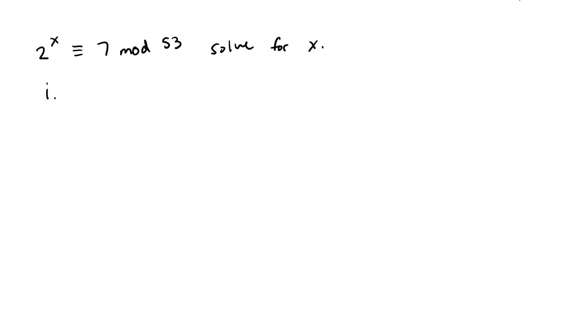So to do this we have a couple of steps. Our first step is to set our m equal to the least integer of the square root of 53 which is our p value and we get 8.